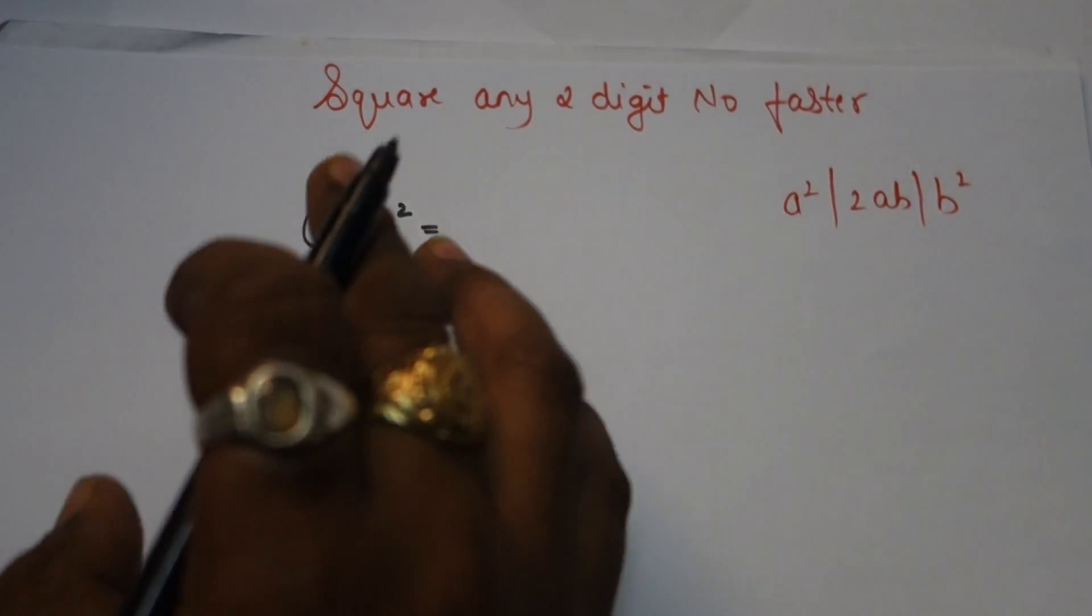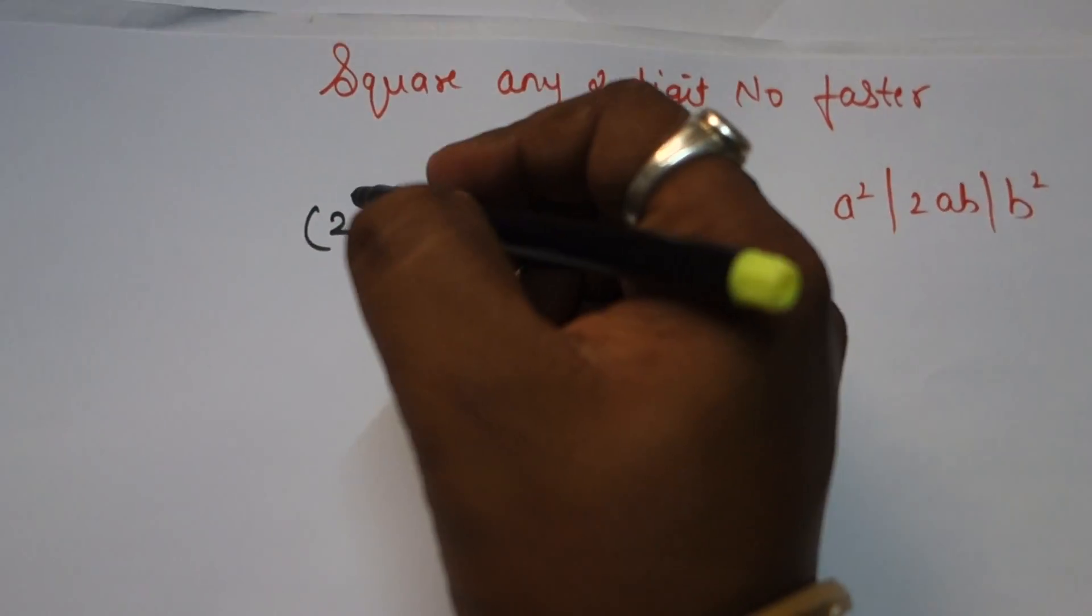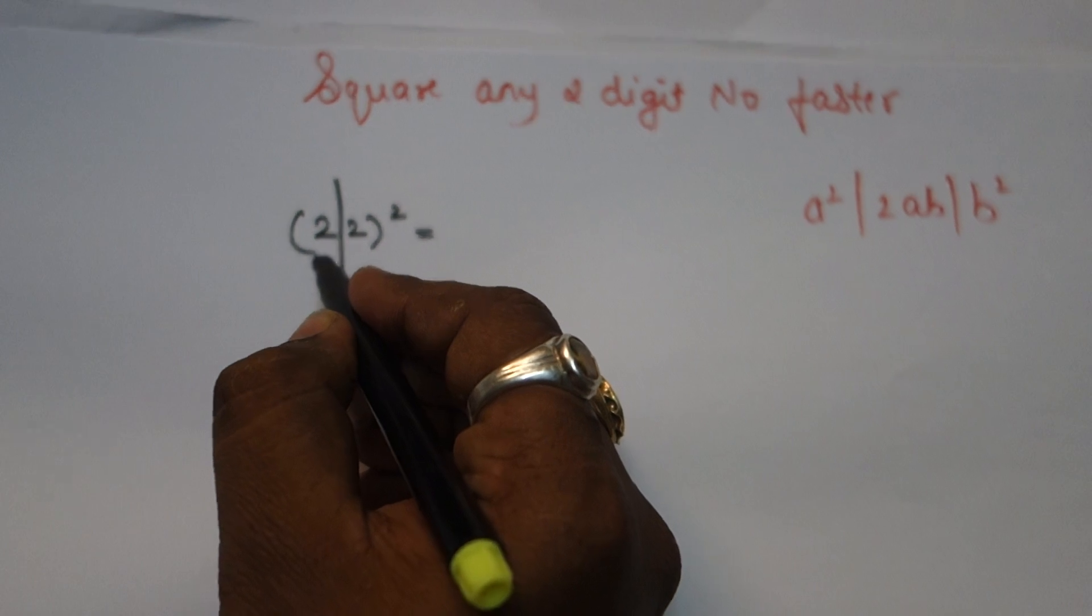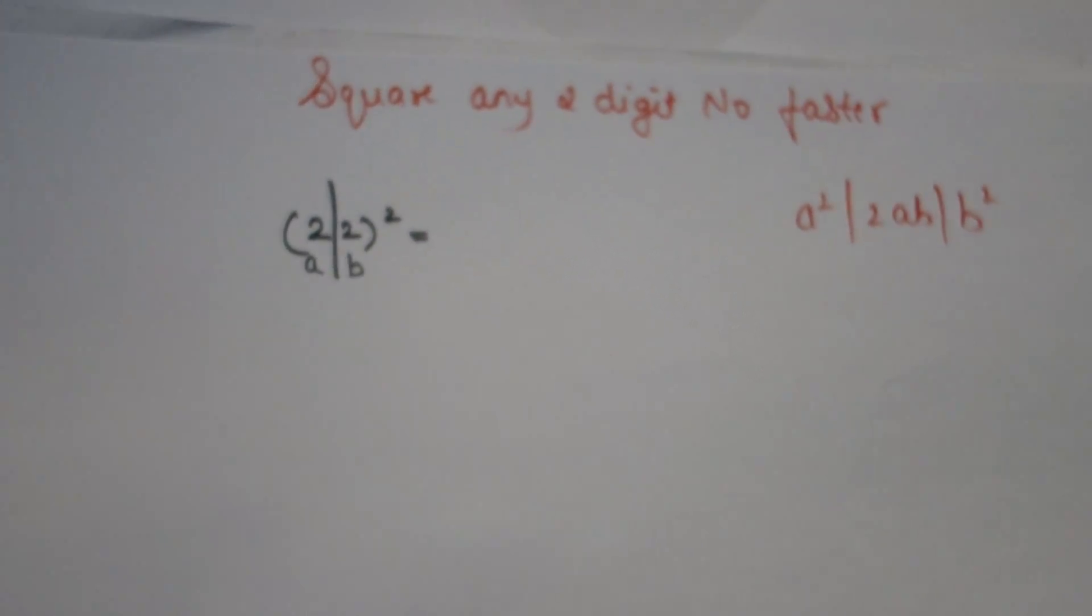How to find a and b? It's quite simple. Break the number. Take the left-hand side number as a and the right-hand side as b.